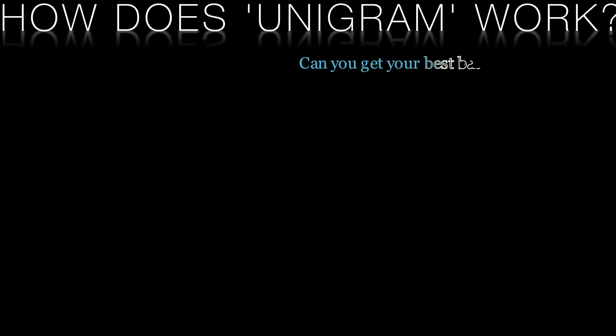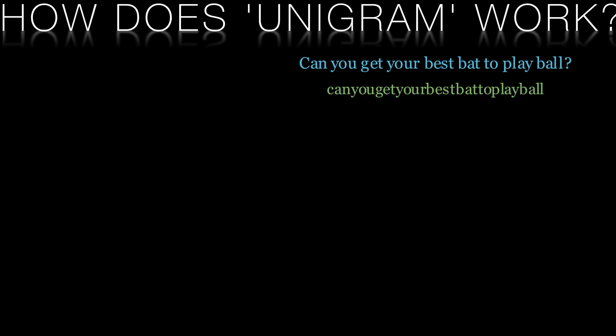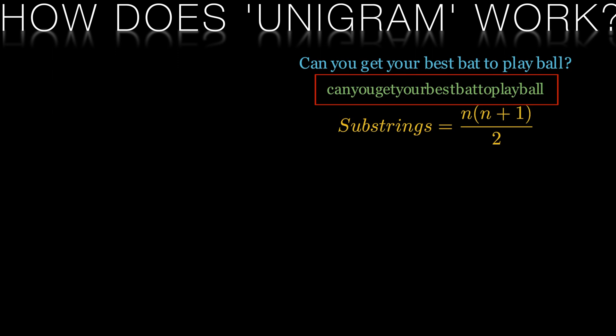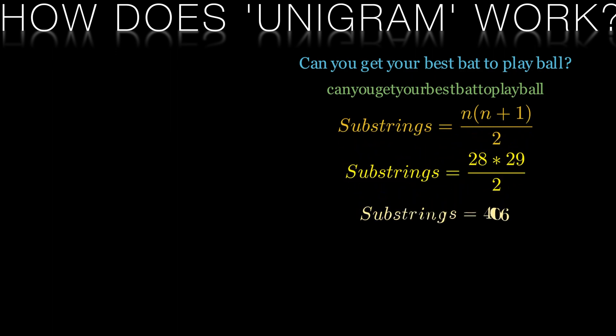Here's a quick overview of how unigram works. To find the number of unique substrings in the given sentence — 'can you get your best bat to play ball?' — we first need to remove the spaces and punctuation marks and convert all the characters to lowercase for consistency. The modified sentence is as shown on your screen. The length of the modified sentence is 28 characters. There are n × (n + 1) / 2 unique substrings in a string of length n, so in this case there are 406 substrings in total.